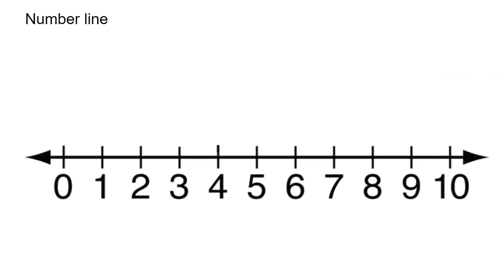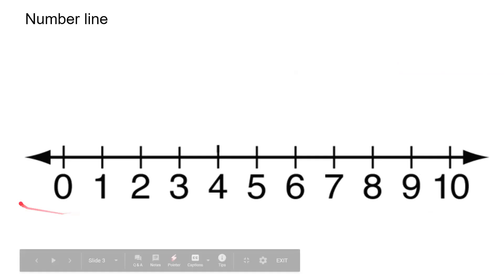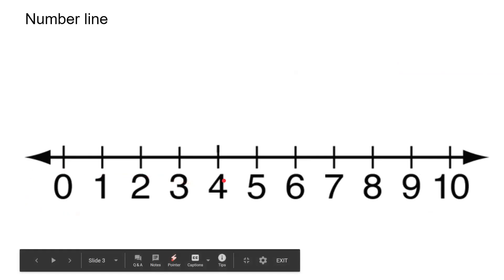Now let us learn something about number lines. So like we all sleep, numbers also like to sleep on this line, and therefore it is called the number line. In the number line, all these numbers lie on this line, and these are their marks or their beds.